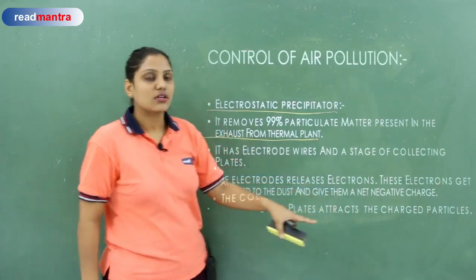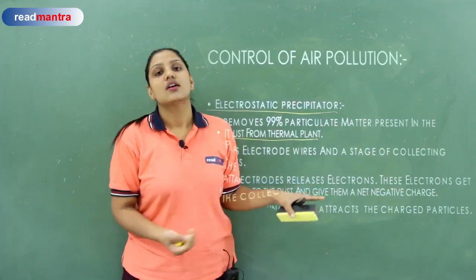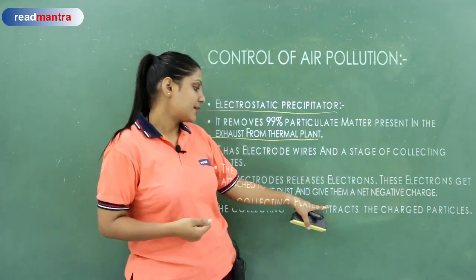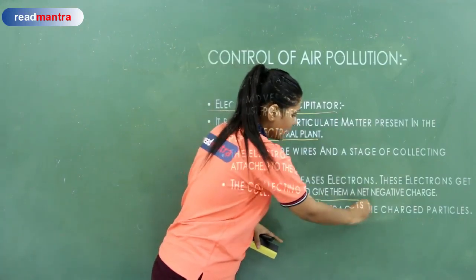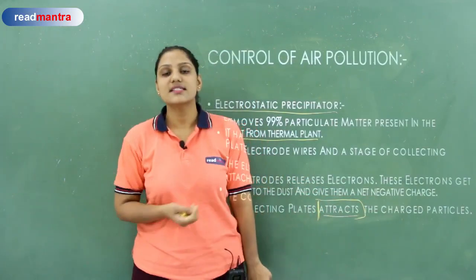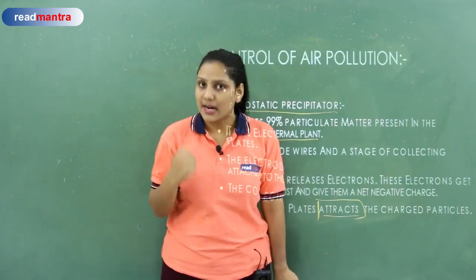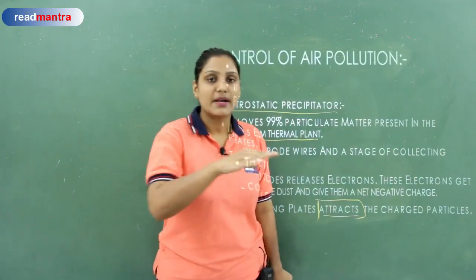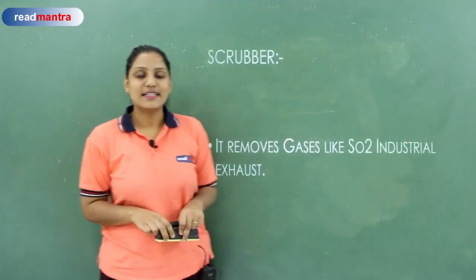The electrode releases electrons. These electrons get attached to the dust and give them a net negative charge. They are attracted toward the anode. Since the anode is positive and electrons are negative, they attract each other. The dust particles attached to the electrons are collected on the plates. So all dust particles collect on the plates — that is how the electrostatic precipitator works.